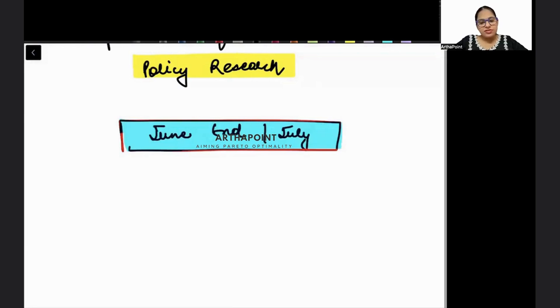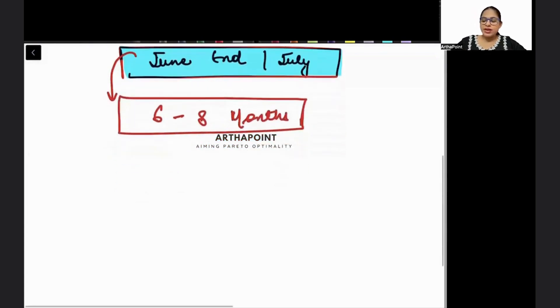Every year the date will be different and will be dependent on the notification that RBI will launch that year. If the first exam is in the month of June end or July first or second week, then accordingly you should be preparing yourself. For complete preparation, you need six to eight months. You need a time of six to eight months to go ahead and prepare for RBI Grade B DEPR exam.